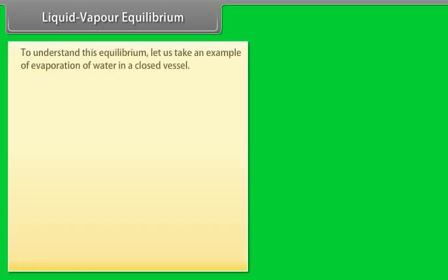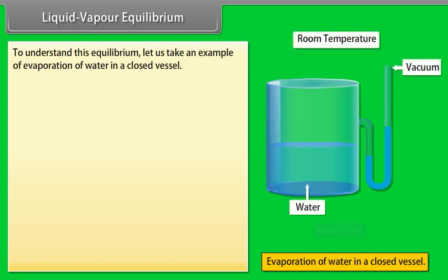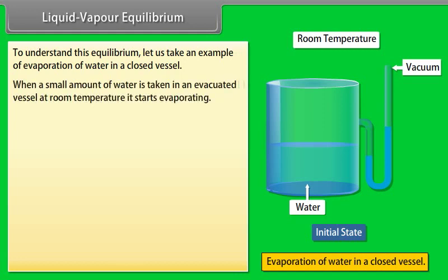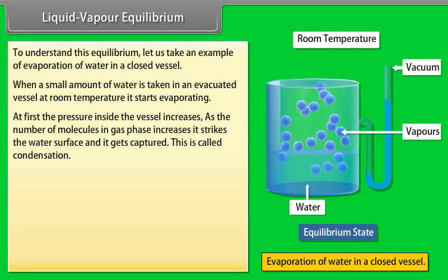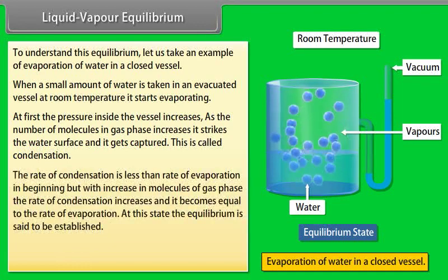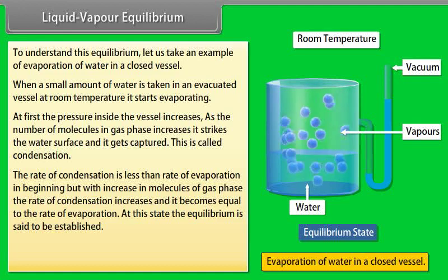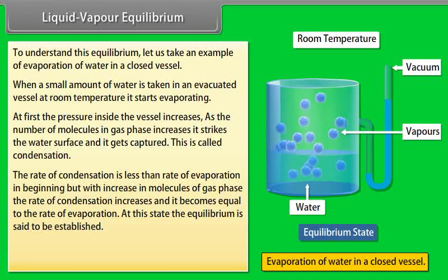Liquid-Vapor Equilibrium: To understand this equilibrium, let us take an example of evaporation of water in a closed vessel. When a small amount of water is taken in an evacuated vessel at room temperature, it starts evaporating. At first, the pressure inside the vessel increases. As the number of molecules in gas phase increases, they strike the water surface and get captured — this is called condensation. The rate of condensation is less than the rate of evaporation in the beginning, but with increase in molecules of gas phase, the rate of condensation increases and becomes equal to the rate of evaporation. At this state, the equilibrium is said to be established.